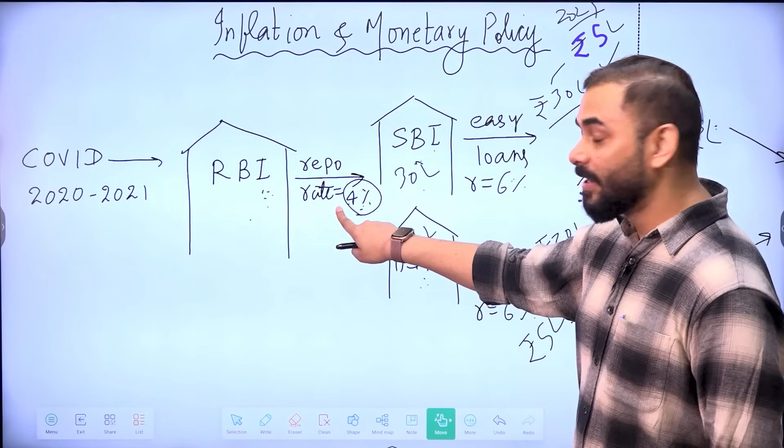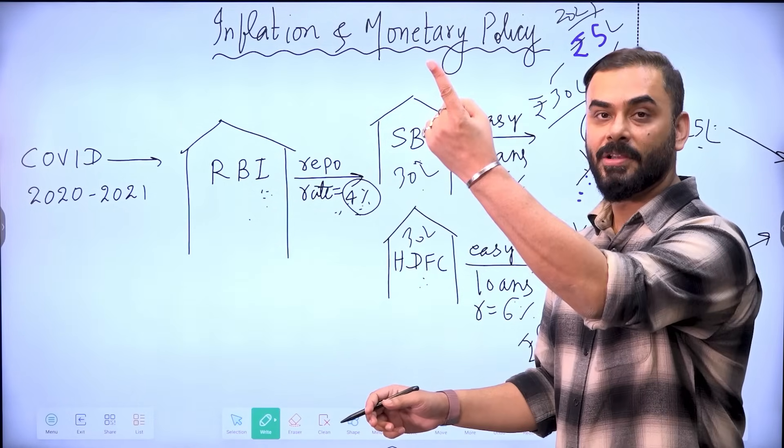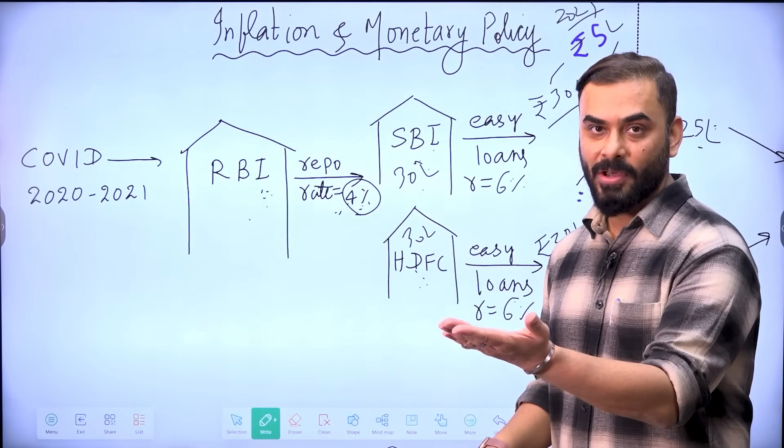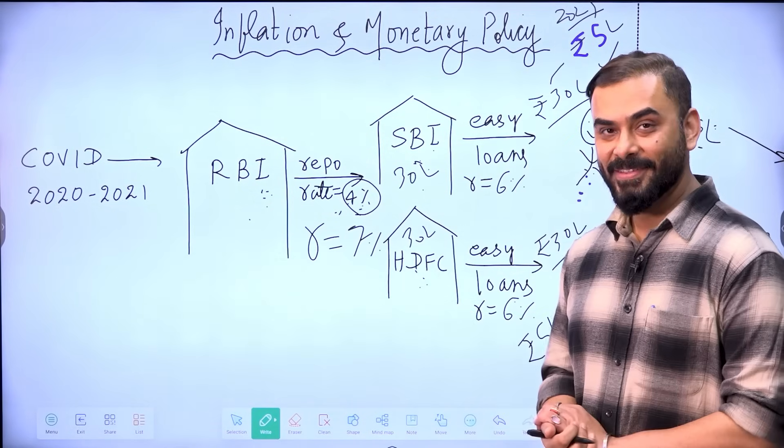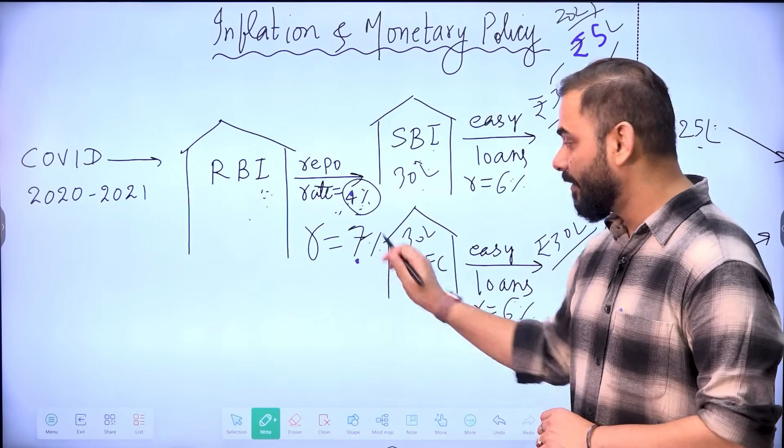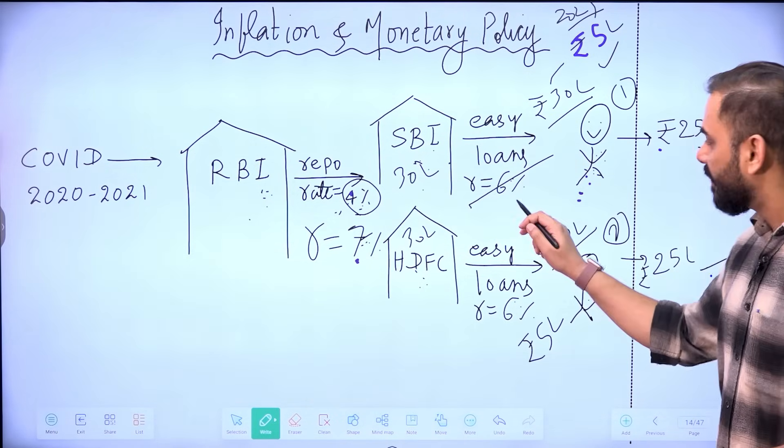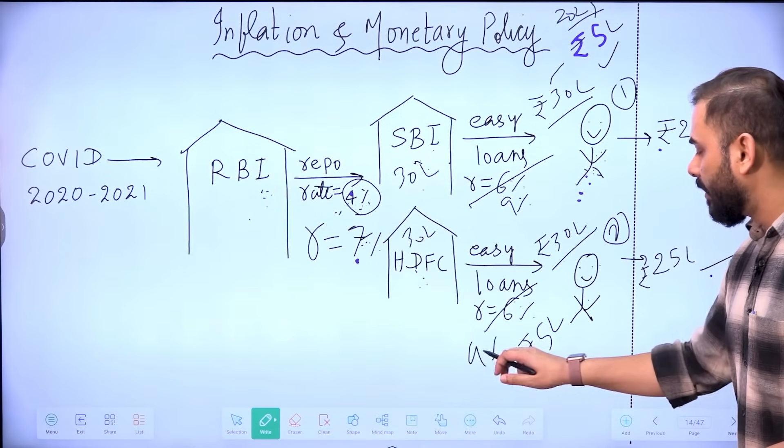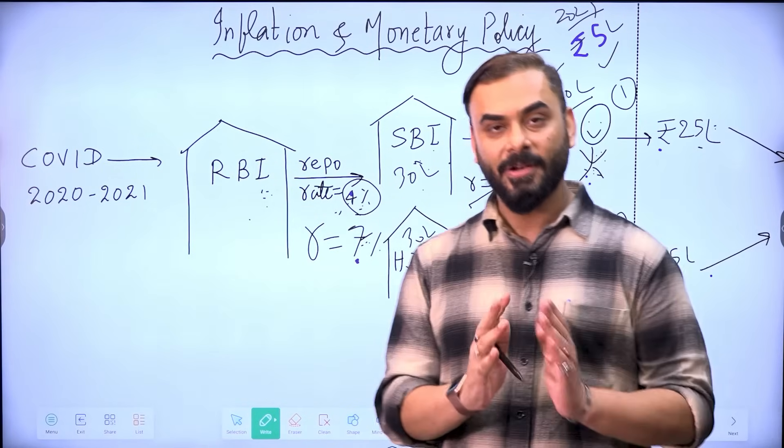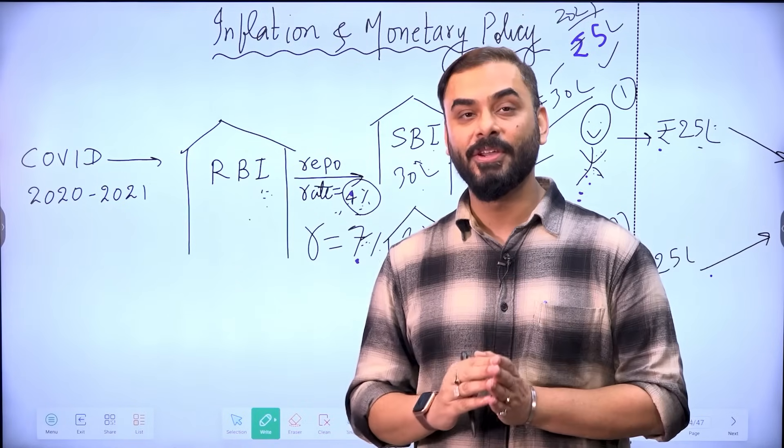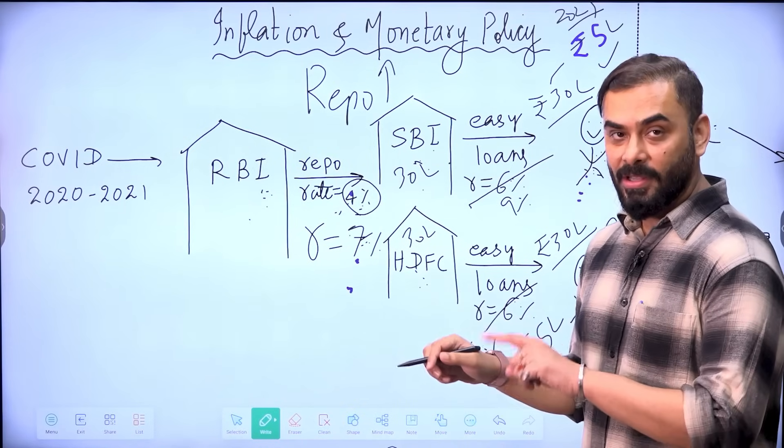So what would Reserve Bank of India do if they want to control? The first thing they will do is next time if HDFC and SBI come to RBI to take loan, what will RBI do? RBI will increase the repo rate. So next time when SBI comes, HDFC comes and they say, can you give me loan RBI? Because people want loan. RBI will say this time the repo rate will be 7%. See repo rate increased to 7% in our example, which means now if this person wants to take loan from SBI, the rate of interest cannot be 6%. It will be 7 plus 2, let's say 9%. And this person will also get the loan at 9%, which means people will become reluctant to take fresh loans.